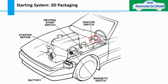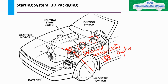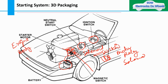Now if you see the starting system 3D packaging - this would be my ignition switch, this would be my neutral switch, this is my starter motor, and this is the magnetic switch - which is nothing but the solenoid. We call it a relay also - magnetic relay or solenoid relay - which is used to switch the motor on. Then we have the battery. As I told you earlier, when we see the capital logic, we go from engine harness, then body harness, then IP harness. If my ignition switch is here, it will come in the IP harness.